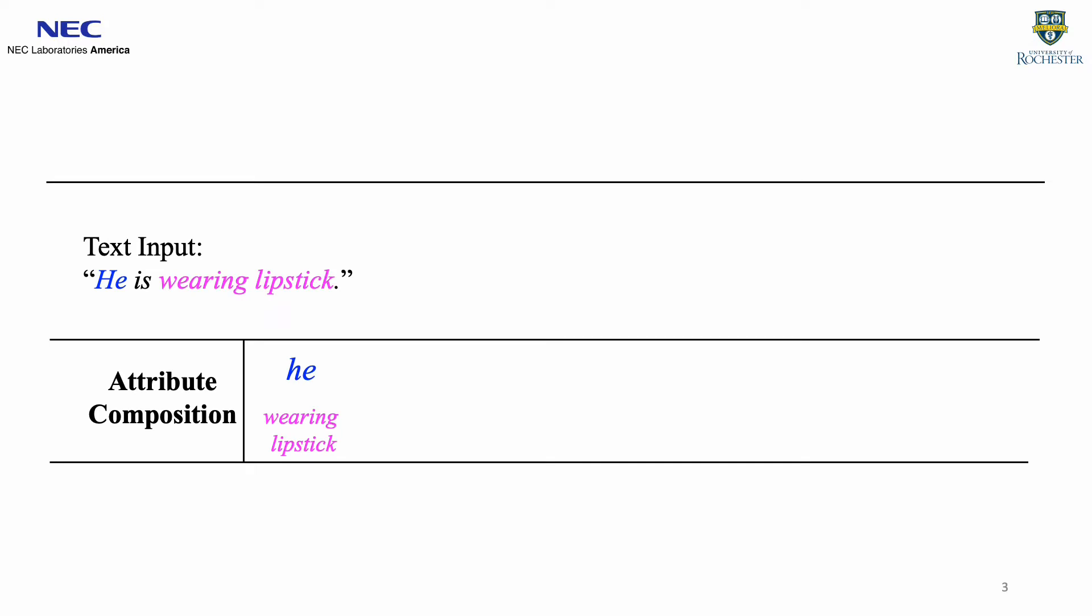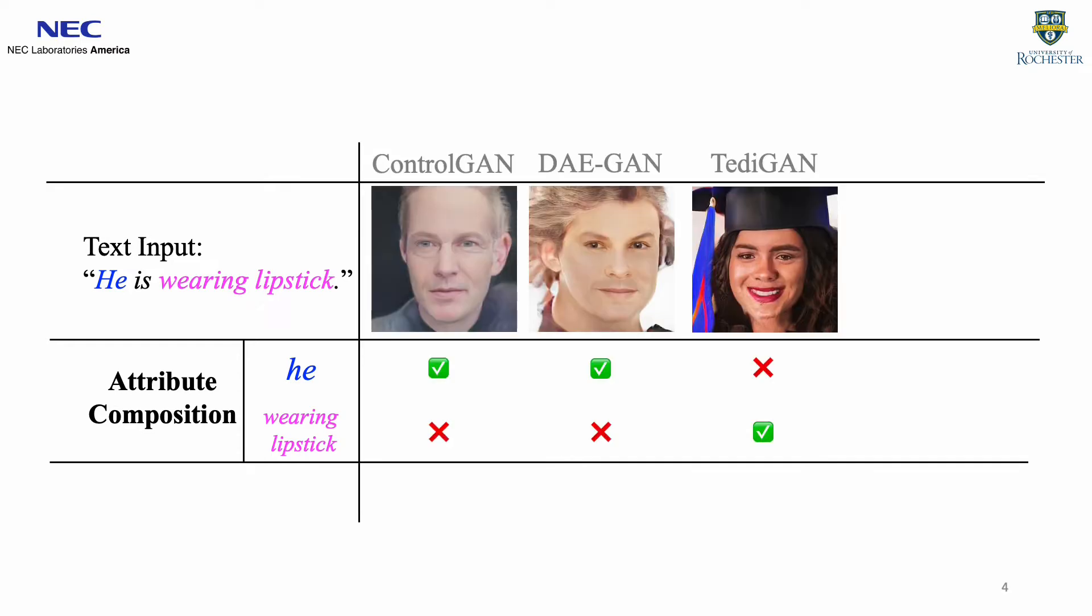However, the problem of compositionality is overlooked by previous text-to-image methods. For example, considering a new text input 'he is wearing lipstick,' which contains an attribute composition that is underrepresented in the training data. In this case, many previous methods incorrectly synthesize either the gender or the wearing lipstick attribute. Lacking compositionality may cause serious problems, such as not being robust under distributional shift and fairness issues. Furthermore, many of them cannot generate photorealistic images.